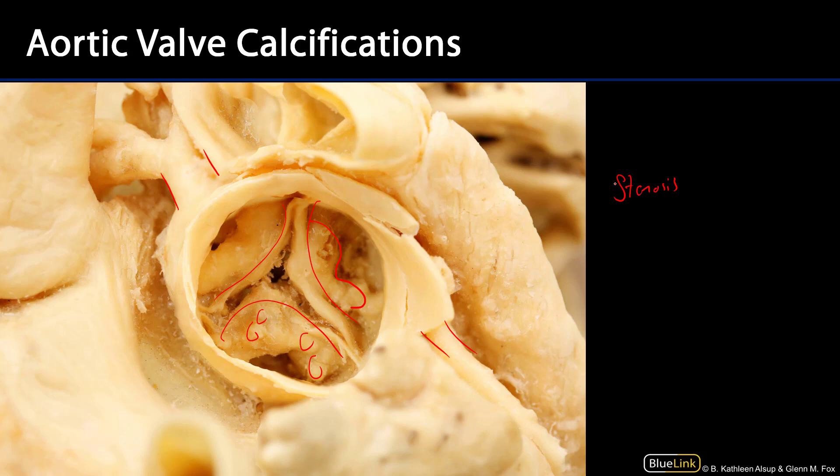That stenosis is going to limit the amount of blood that flows out of the left ventricle and into the aorta, both causing an oxygen deficit in metabolically active tissues, but also dramatically increasing blood pressure and leading to ventricular hypertrophy.